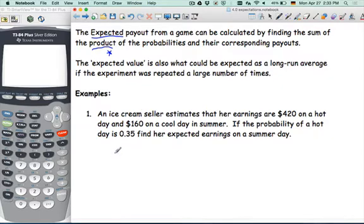Example number one. An ice cream seller estimates that her earnings are $420 on a hot day and $160 on a cool day in summer. If the probability of a hot day is 0.35, find her expected earning on a summer day. I'm going to make a table.